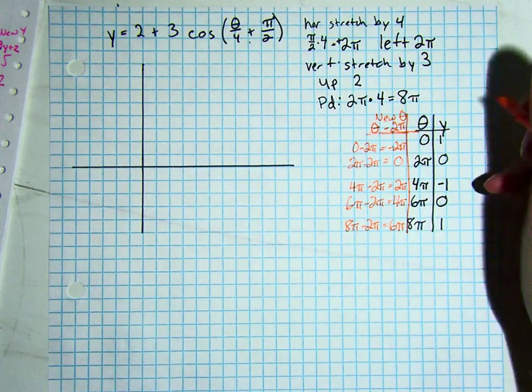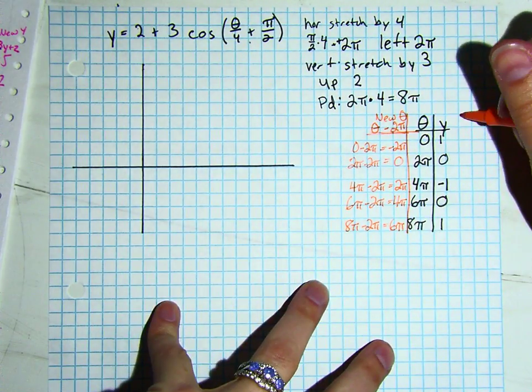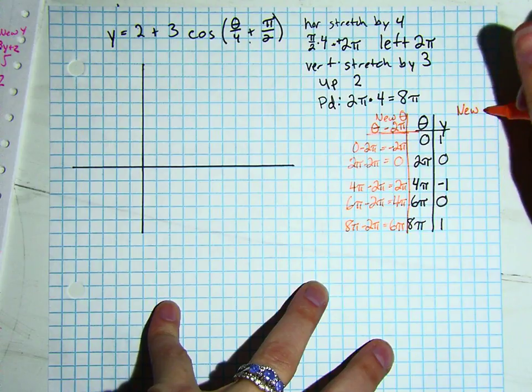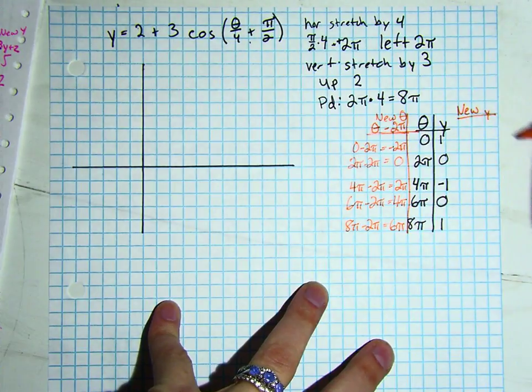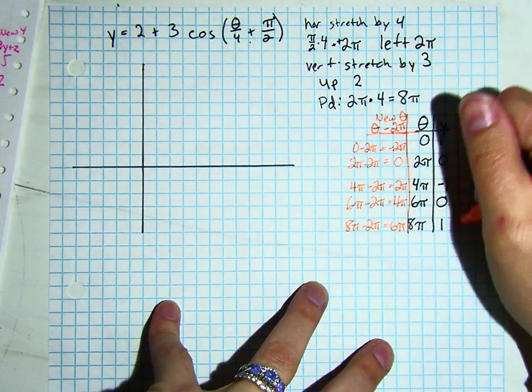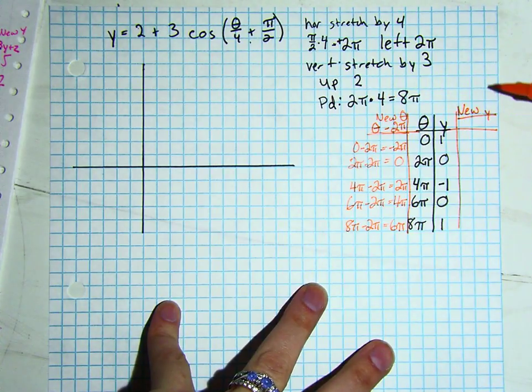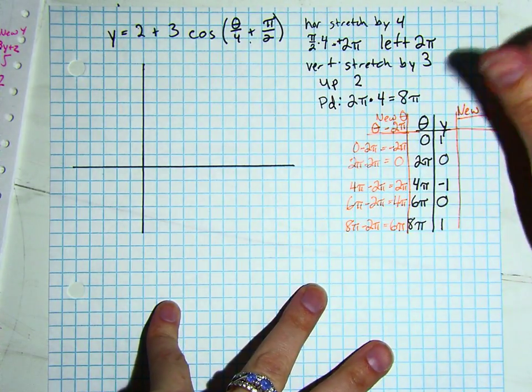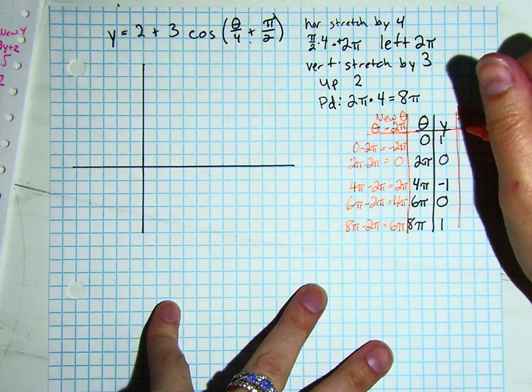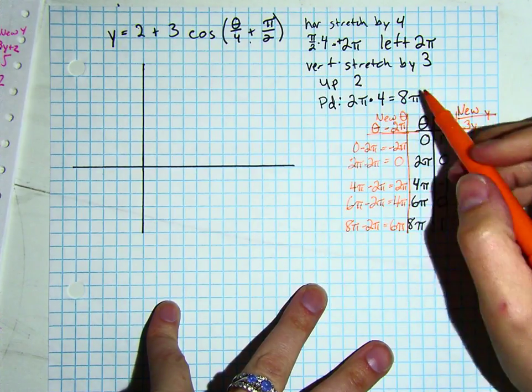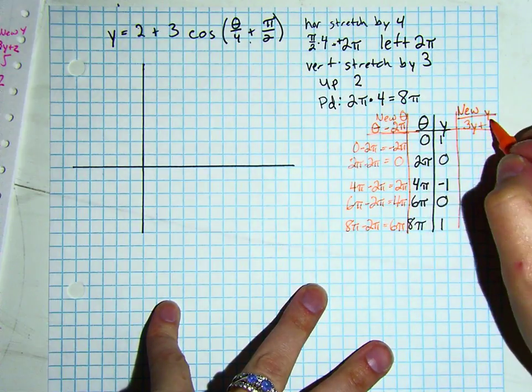Then I'm going to do a new y. In my new y's, I am going to take into effect both the vertical stretch and the up 2, by taking my old y, multiplying by 3, and adding 2.